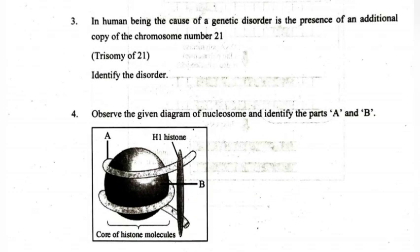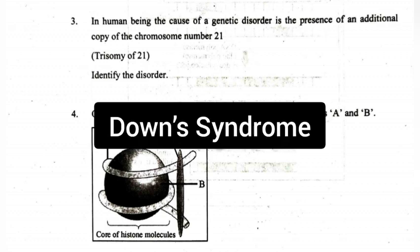3. In human beings, the cause of a genetic disorder is the presence of an additional copy of chromosome number 21. Identify the disorder. Answer: Down syndrome.